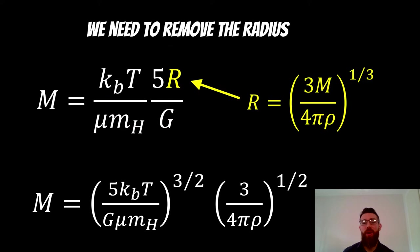Now, in that expression, we still have this R, which is the radius of the cloud, which we don't want.